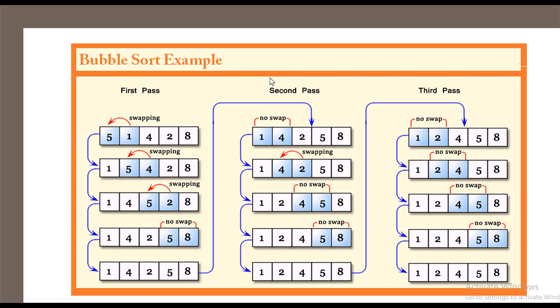Let us take an example in the next slide. In the screen you can see that the example is 5, 1, 4, 2, 8. The technique used in bubble sort is: in the first pass, we have to compare the first two elements, 5 and 1. Since 5 is greater than 1, we shift them — 1 is moved to the first position and 5 is shifted to the second position.